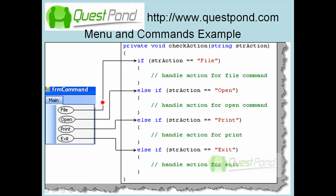Here's a practical example: we have a menu with file, open, print, and exit — these are basically actions or requests. The normal way to code this is using if-conditions — if the action is file, do something; if it's open, do something else. The problem is we end up with many if-conditions, and adding any new action requires adding yet another if-condition.